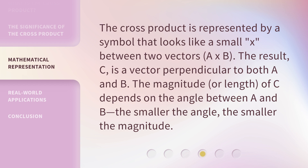The cross-product is represented by a symbol that looks like a small x between two vectors: A × B. The result, C, is a vector perpendicular to both A and B. The magnitude, or length, of C depends on the angle between A and B — the smaller the angle, the smaller the magnitude.